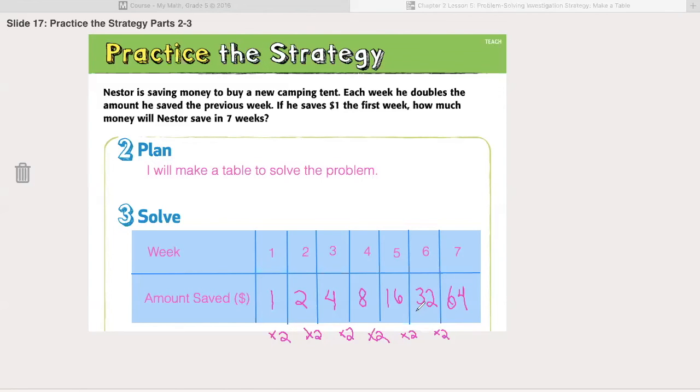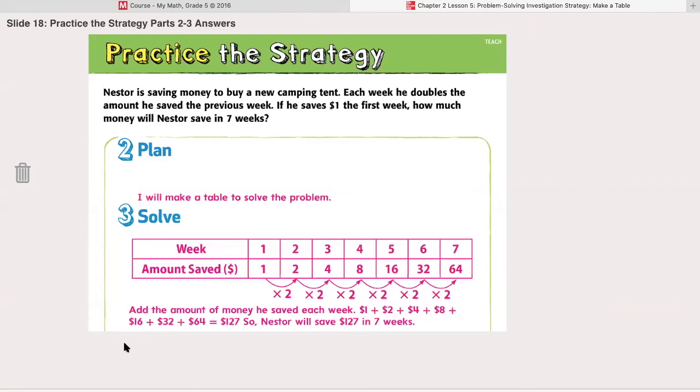because he did not lose the money that he saved in the previous weeks, so we need to add up all of that money. What would he have saved total if we add all of these numbers together? If we were to add the amount of money he saved each week, one dollar plus two dollars plus four dollars plus eight dollars and so forth, Nestor will have saved one hundred and twenty seven dollars in seven weeks.